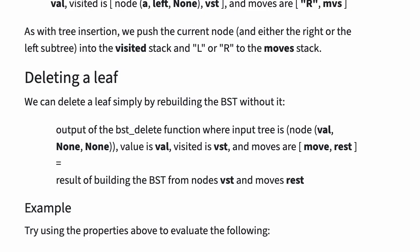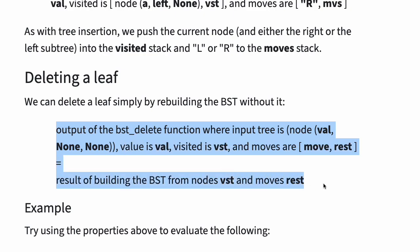We can delete a leaf simply by rebuilding the BST without it. The output of the BST delete function where input tree is node val, value is val, visited is VST, and moves are move and rest, is equal to the result of building the BST from nodes VST and moves rest.